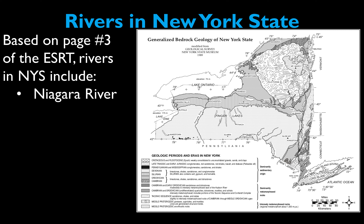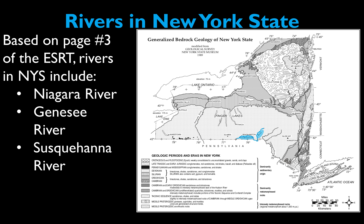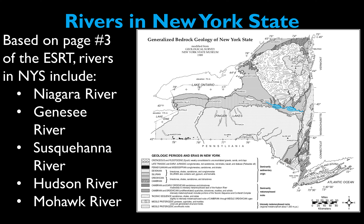We're going to start with the Niagara River, highlighted here on the map in blue, all the way in the western part of our state. A little further east we have the Genesee River, and even further east from there we have the Susquehanna River. Further east is the Hudson River, which flows in a north-south direction. Finally, the Mohawk River flows into the Hudson River — that's known as a tributary, a river that flows into another one to keep fueling its water supply. The Mohawk River is actually the biggest tributary that flows into the Hudson River.